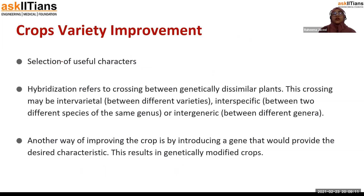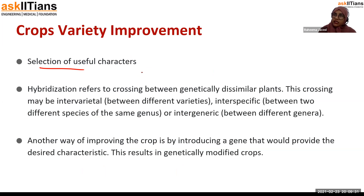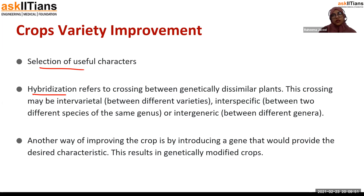For improving crop variety, we have to select useful characters. The seeds provided to farmers should be of different varieties with different characters, adaptable to different environmental conditions, and should have nutritional characteristics that are advantageous to farmers. Hybridization is one such technique by which we can select useful characters and use them to our advantage.